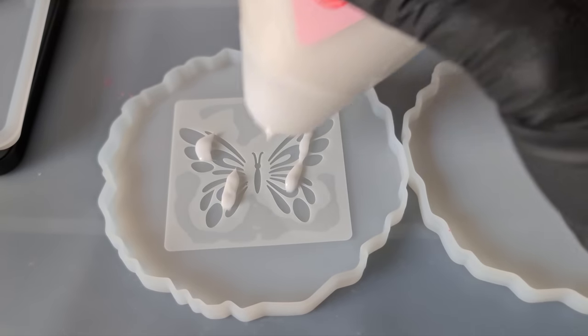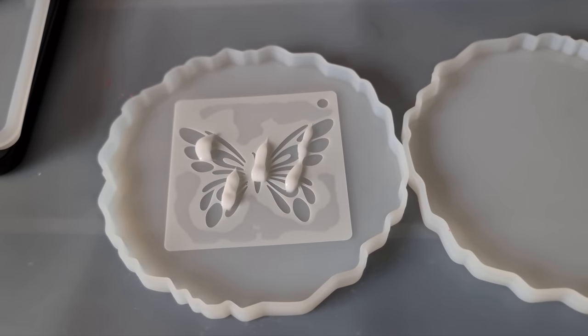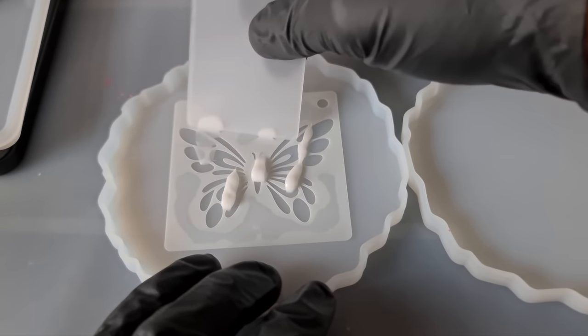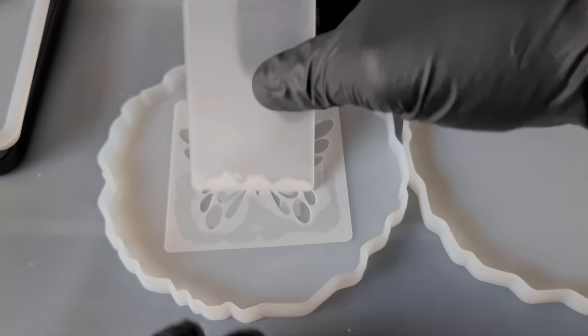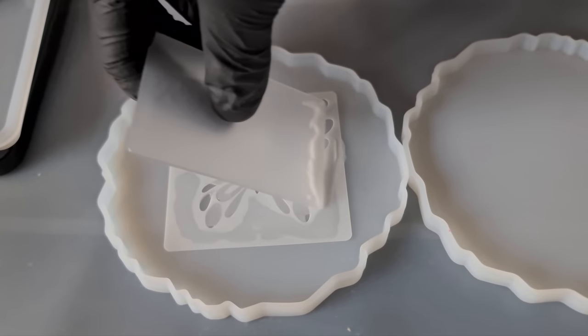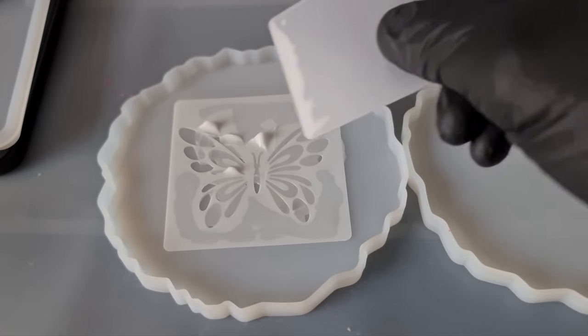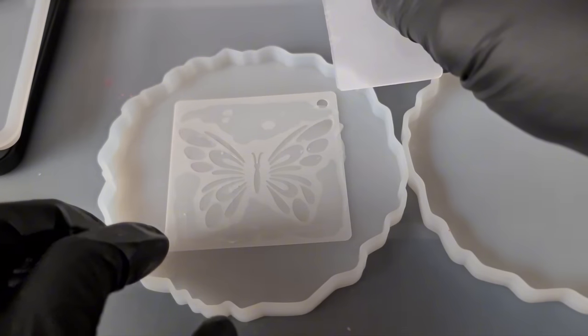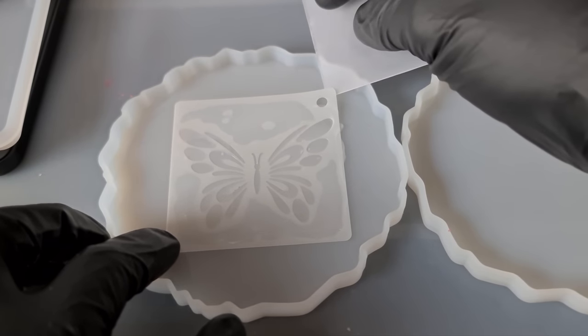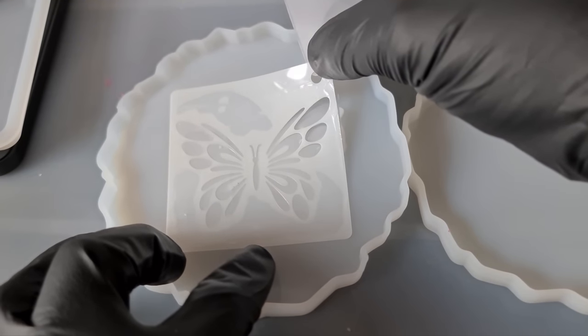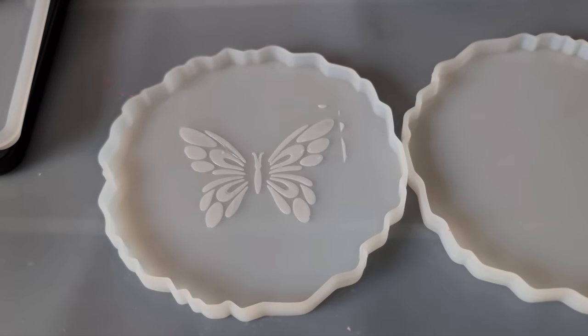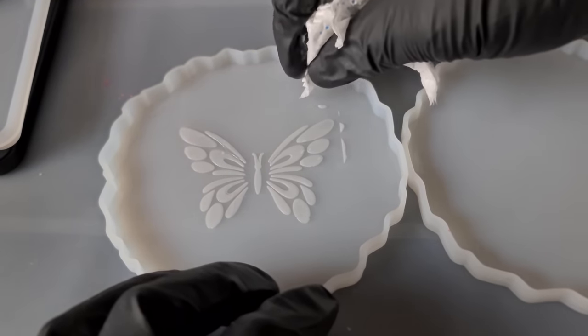So we just apply that over the stencil. And then we take our plastic card. You could use anything that's kind of a credit card. Just don't break it and blame me. And we just, I love this technique. It is so easy. If it goes wrong, you can just wipe it off and start again. And then we carefully just lift the stencil up and peel it away. Just make sure it doesn't slide and disturb what we've put down. And again, any excess, this is the great thing. Any mess just wipes away.